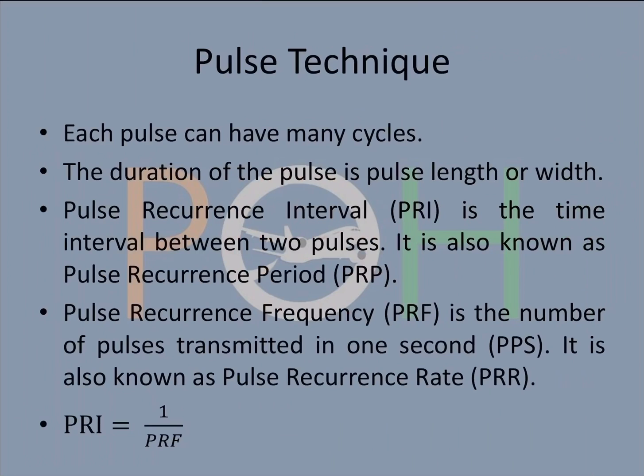PRI is the time interval between two pulses, also known as pulse recurrence period. Then there is pulse recurrence frequency, which is PRF. It is the number of pulses transmitted in one second, PPS - pulses per second. It is also known as pulse recurrence rate, PRR. The relation between them is PRI is equal to one upon PRF. We shall solve a problem also.